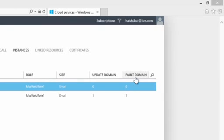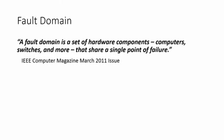Now let's drill into each of them. Fault domain is a set of hardware components that share a single point of failure. For example, a computer that is plugged into a wall outlet is a fault domain, because if the computer is unplugged, our hardware — monitor, CPU, hard drive, etc. — will stop working.